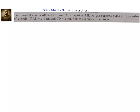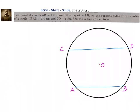Let us go ahead and get the circle in place. We have drawn a circle with two parallel chords AB and CD. We know the distance between them is 3.9 and they are on the opposite sides of the center. The meaning of 3.9 centimeters apart is that the perpendicular distance between AB and CD is 3.9 centimeters.